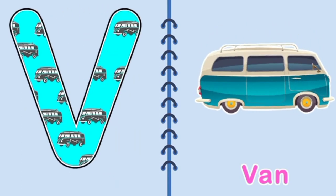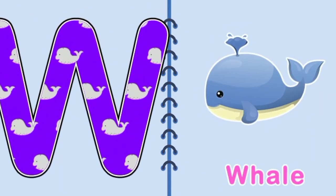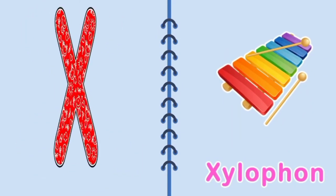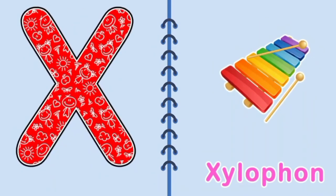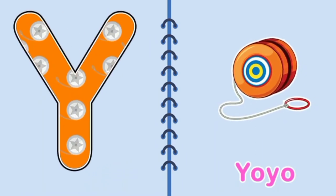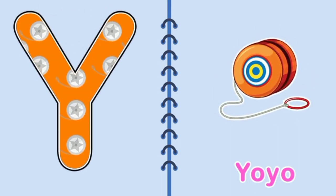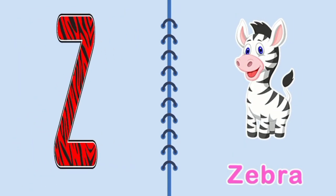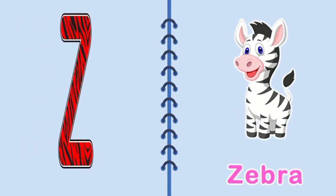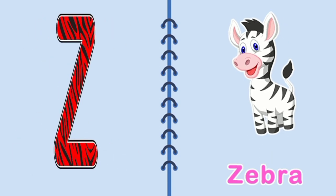V, Van, V for Van. W, W, Whale, W for Whale. X, X, Xylophone, X for Xylophone. Y, Y, Yo-yo, Y for Yo-yo. Z, Z, Zebra, Z for Zebra. Thank you.